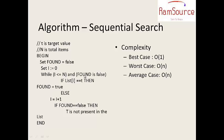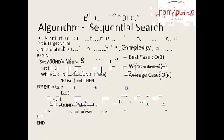This is the algorithm. If the first element matches, you can execute the result — that is the best case. In the worst case, the while loop runs with i less than or equal to n, so it executes n times. In the average case, it is the same. This is the algorithm of sequential search.